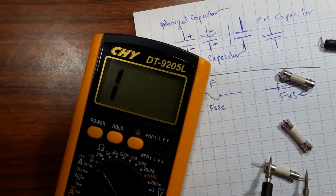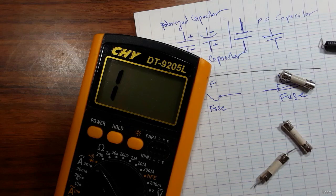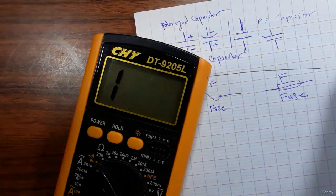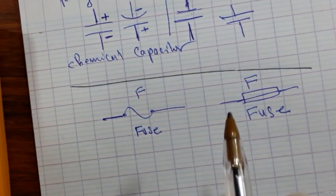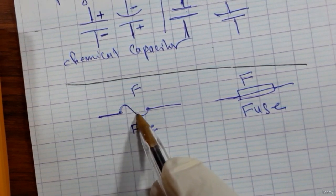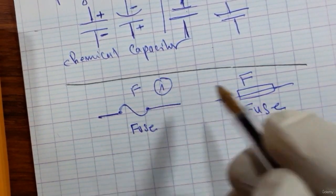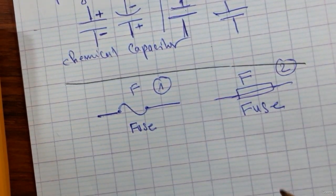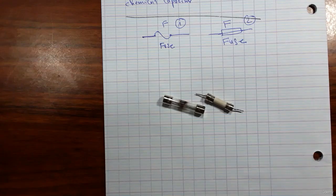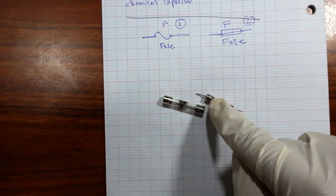Let's check this one. This is a bad fuse because we don't hear any buzzer. As I've shown you, these are the recognized samples for the fuse — sample number one and sample number two. We checked and found that these two fuses are bad.